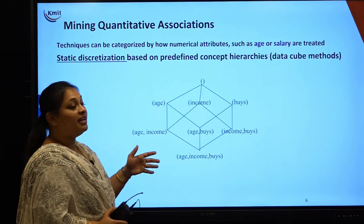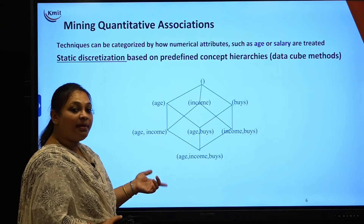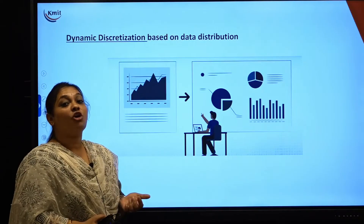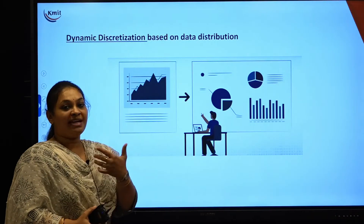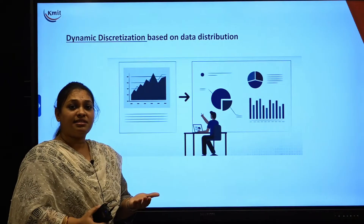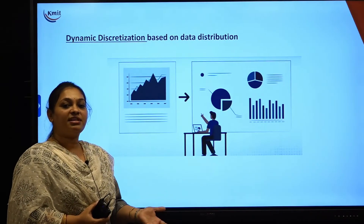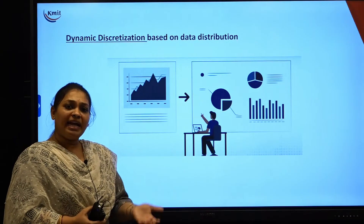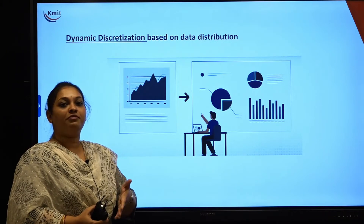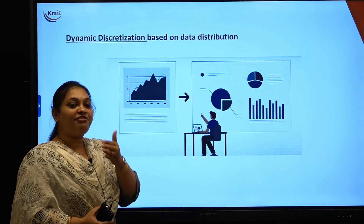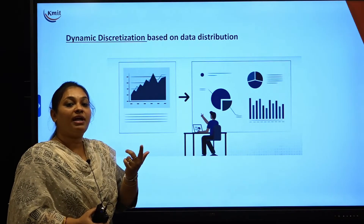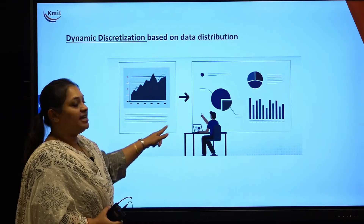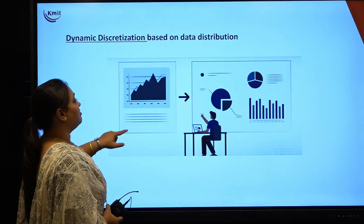Whereas coming to dynamic — the name itself tells us — I can change it. The best example is the stock market, which changes from time to time. Your results also: in first year first semester you might have got 90%, in first year second semester 82%, in year 2-1 perhaps 76%. So your graph is changing; it is dynamic because the result changes over time. This is dynamic discretization.